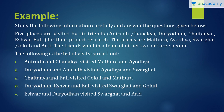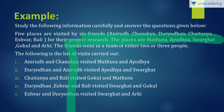Moving on to the problem, we will see an example. Five places are visited by six friends: Anirut, Chanakya, Duryodhan, Chaitanya, Ishwar and Bali — for their project research. The places are Mathura, Ayodhya, Swargaat, Gokul and Arki. There are only two parameters: the places and the people. So instead of making a tabular column, in this question I will show you the tick-and-cross method, or yes-or-no method. I would suggest you only use that method when you have just two parameters; for more than two parameters, it is not suggested.